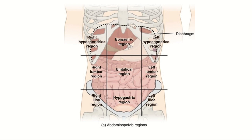Here are the nine abdominal regions, divided by two vertical lines and two horizontal lines. The two vertical lines are the mid-clavicular lines — they run straight down from the middle of the two clavicles. The first horizontal line is the transpyloric line, because it cuts through the pylorus of the stomach. Its exact position is halfway along the line joining the suprasternal notch and the pubic symphysis.